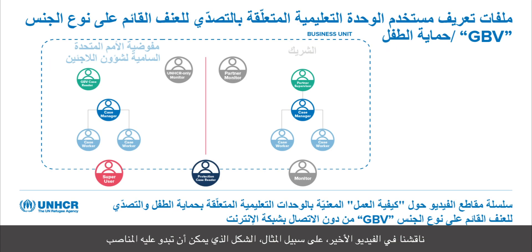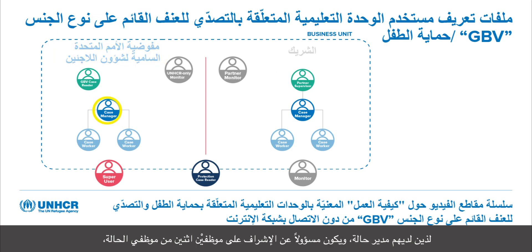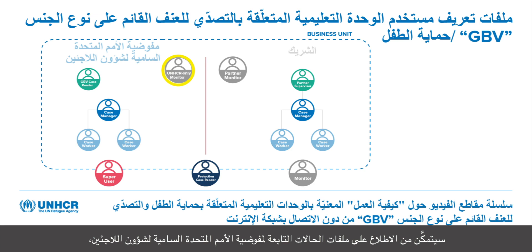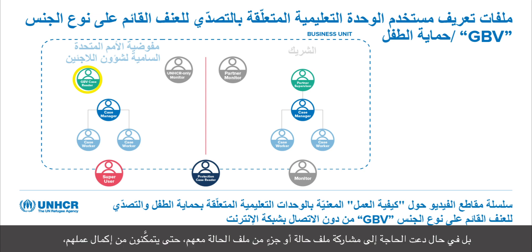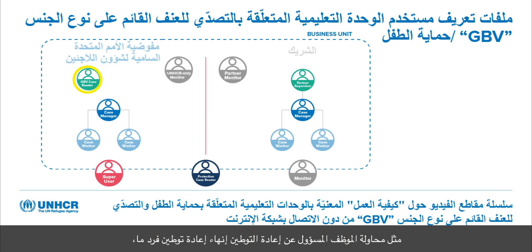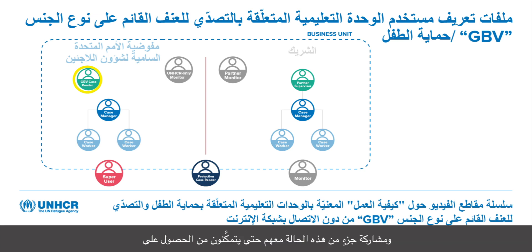For example, within a business unit, you can have UNHCR staff with a case manager supervising two caseworkers, a UNHCR-only monitor who can see UNHCR case files but not identifiable information — only data used for quality assurance. Individuals granted access as a case reader don't have access to files automatically, but if a case or part of a case needs to be shared with them — such as a resettlement officer finalizing resettlement — the caseworker responsible for the GBV case management can share that portion so they can complete their processes.